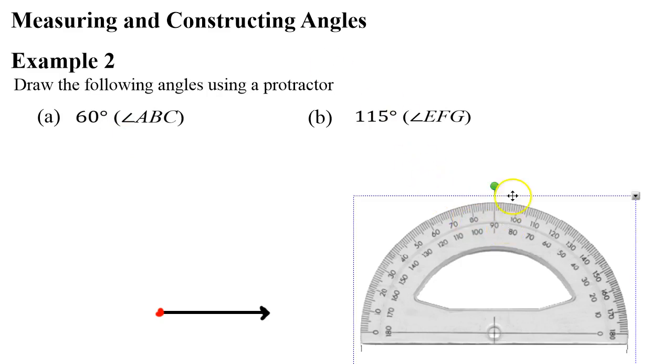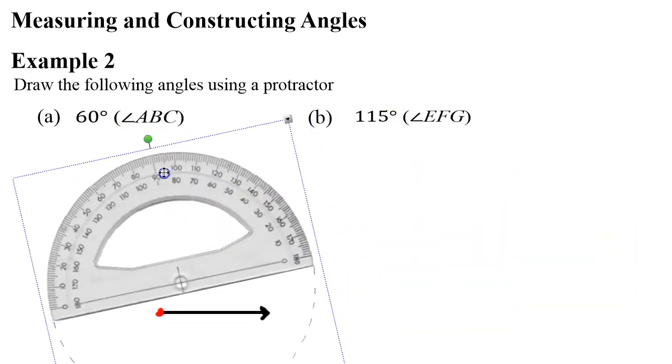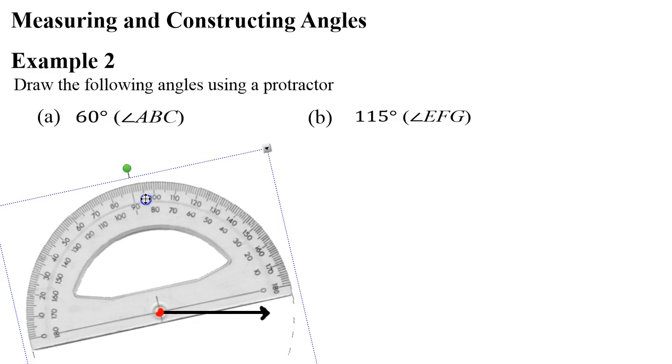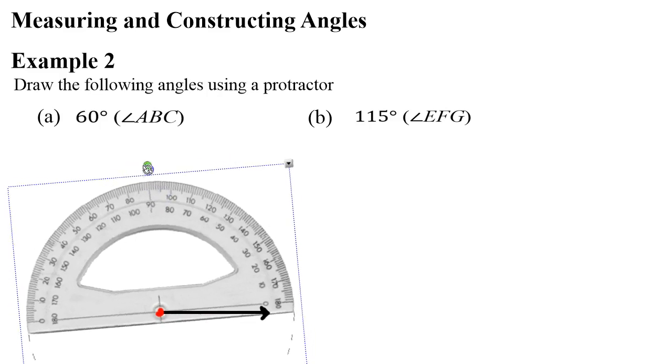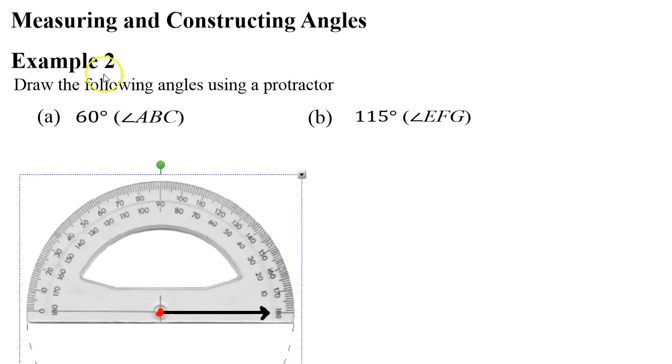Okay, I'm now going to grab my protractor and put the centre point on the vertex, and I'm going to turn it so that the arrow points to the zero. I want to make note that the zero is on the inside of the set of numbers. Now, I'm measuring to 60 degrees, so I'm going to use the numbers on the inside until I reach the number 60, like so.